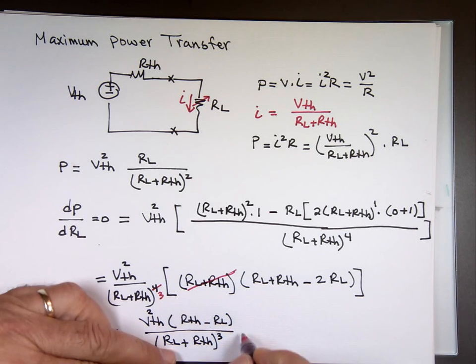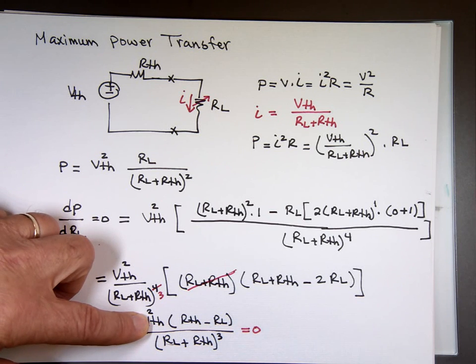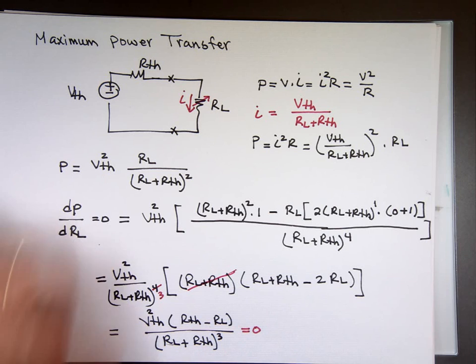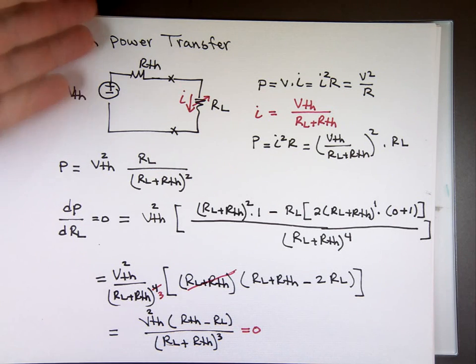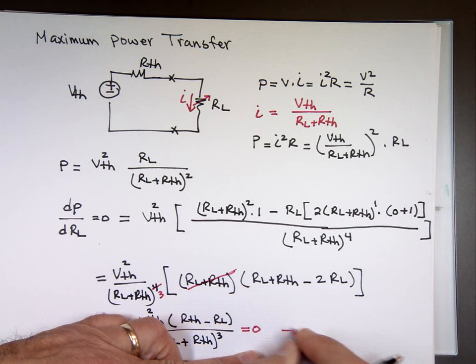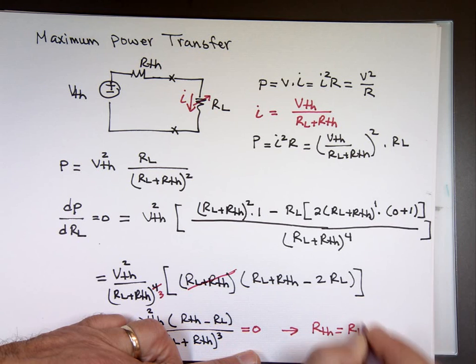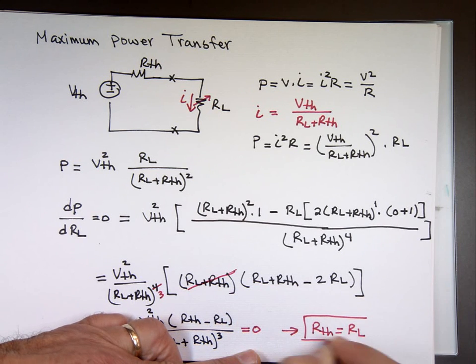And you want to make that equal to zero. You want to take the derivative, set it equal to zero. Well guess what? When you have a fraction and you want the fraction to be zero, the only way that will happen is what? If the top is zero. Well V Thevenin will never be zero. That's the number. We have a Thevenin circuit, so we know that's not zero. So the only way this will be zero if what? If R Thevenin equals R sub L. And that's the equation I was trying to derive for maximum power transfer.